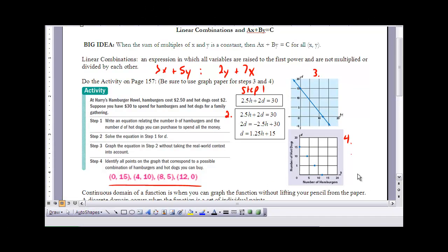Here's the answers to that activity then. So step 1, if you're going to write an equation for that situation, we can write it as a linear combination where we have 2.5 times H, because it's $2.50 for each hamburger, and 2 times D. If I add those together, the total amount of money should be $30.